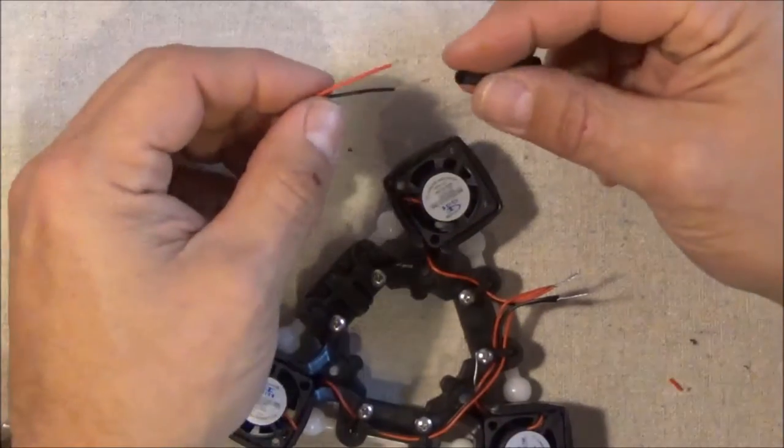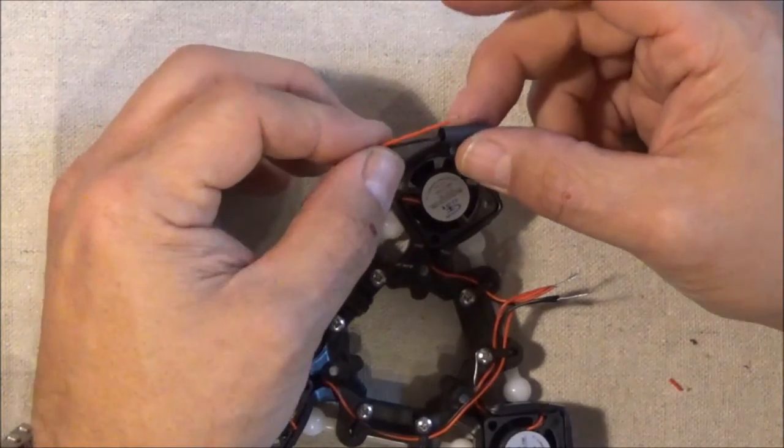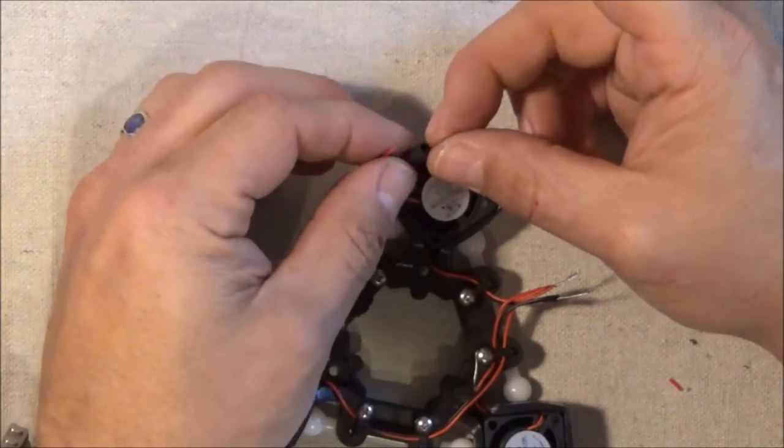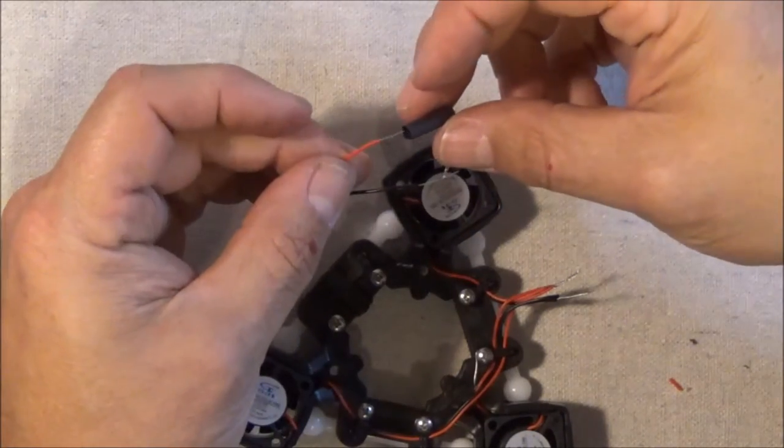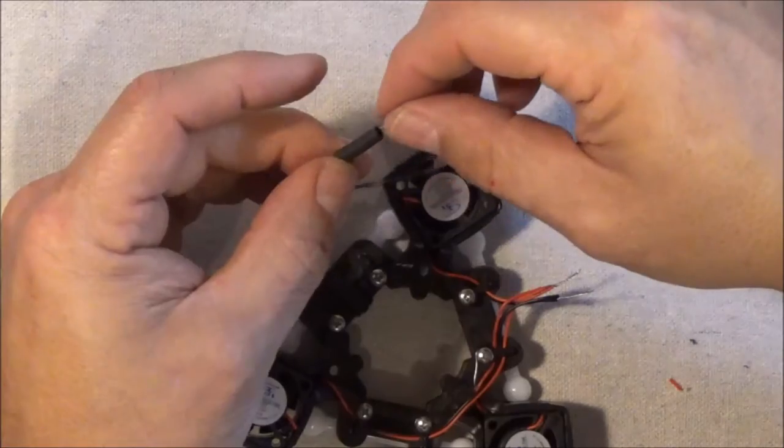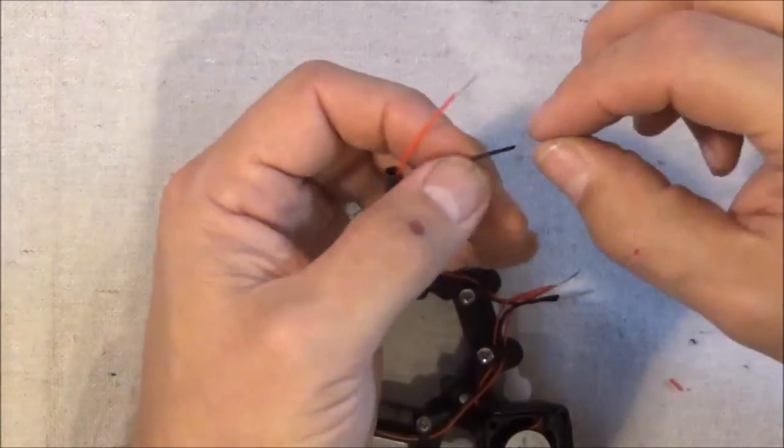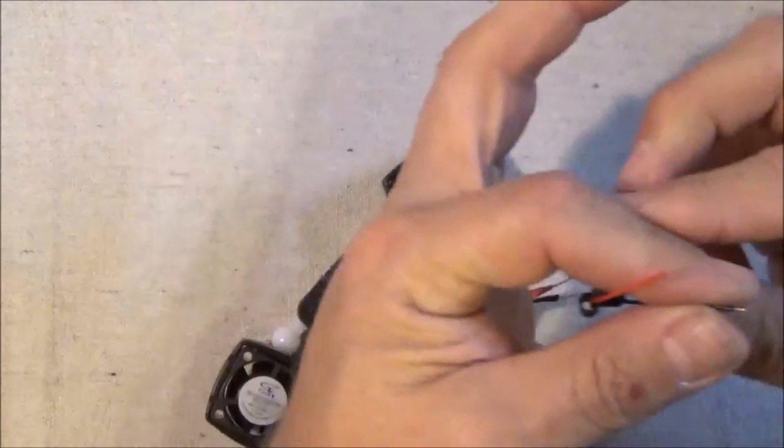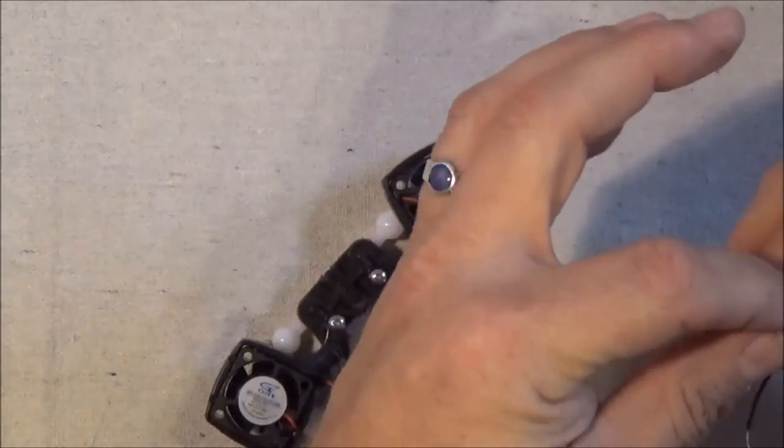Now we're going to take our heat shrink tubing and slide it on because we're going to bind these together and solder them here in a second. So let's start off with the red first.